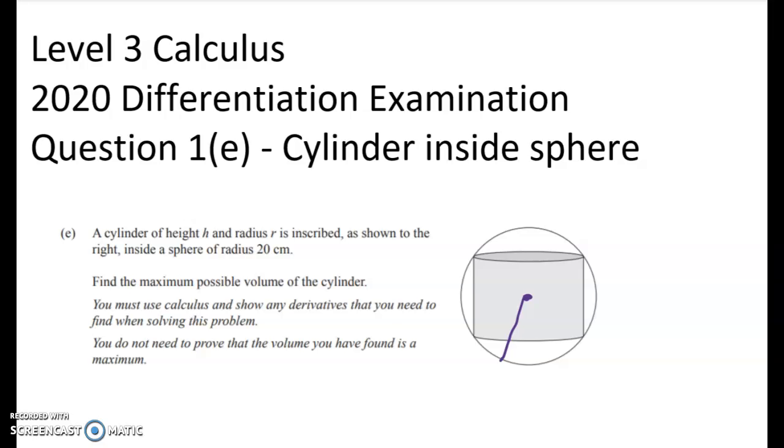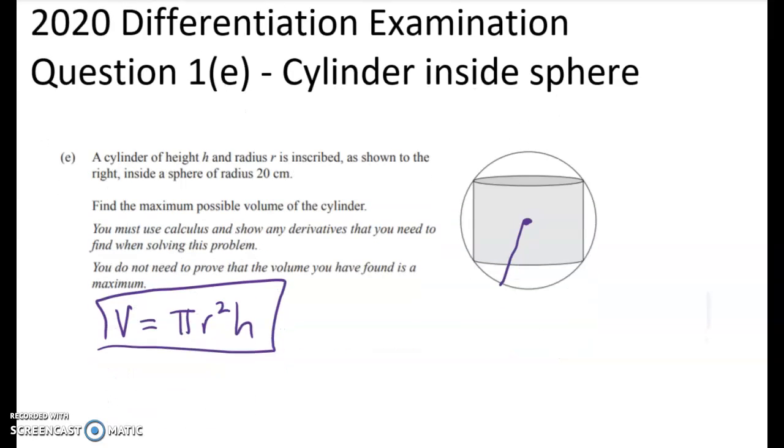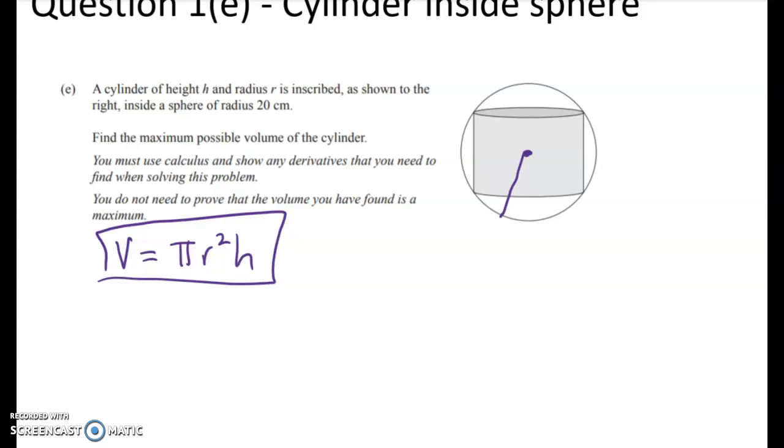Our job is to find the maximum possible volume of the cylinder. So the first thing to remember is that the formula for the volume of a cylinder is pi R squared H. This is what we need to maximize.